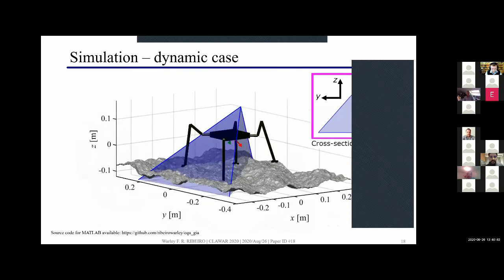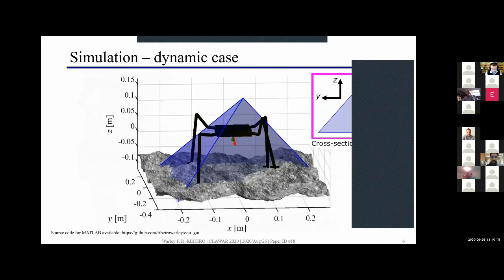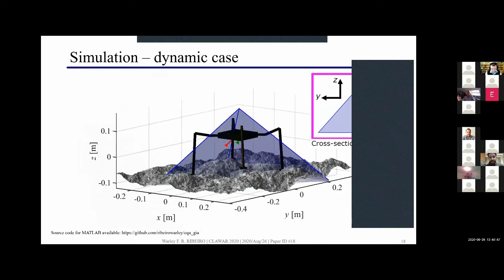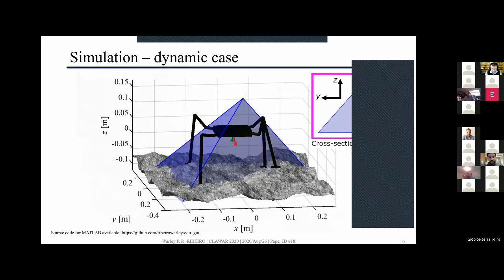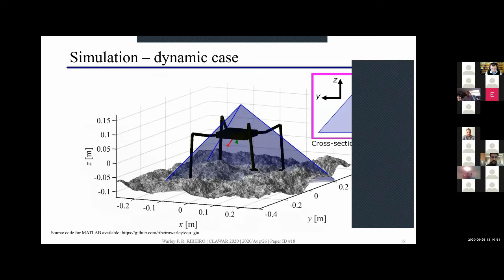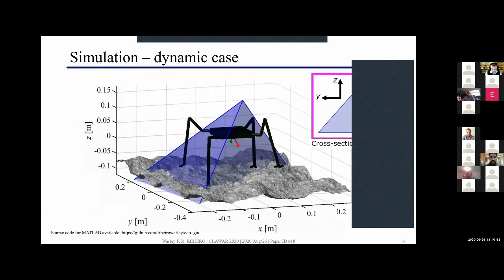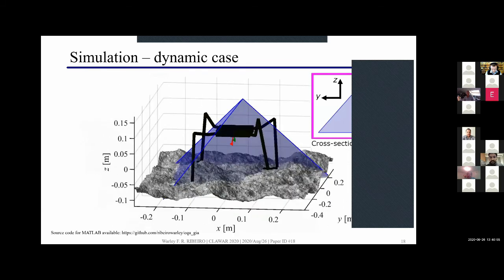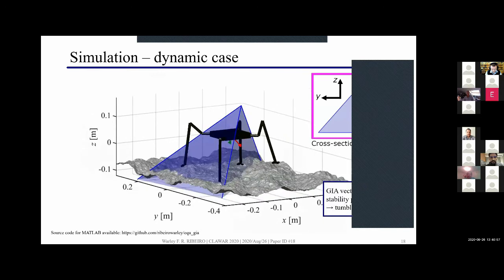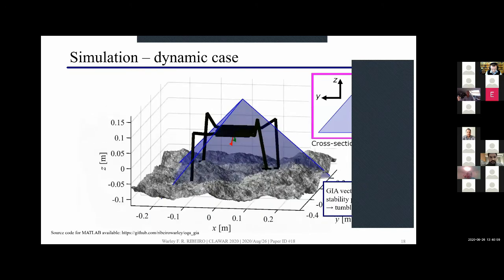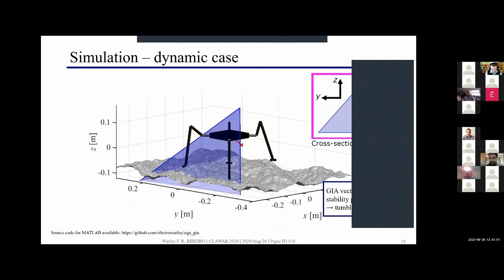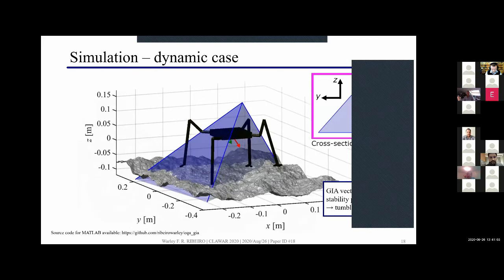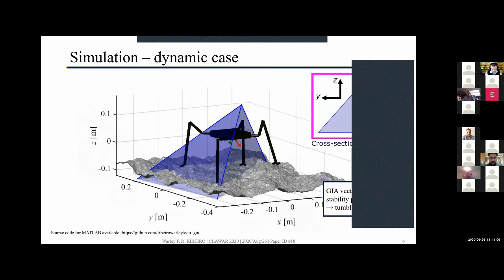For the second case I have here a dynamic case where the robot's base has an acceleration along the y direction. Here we can see that the GIA vector is outside the polyhedron so this is a tumbling case. For more details of this simulation conditions I have this source code on the github page so please check it.